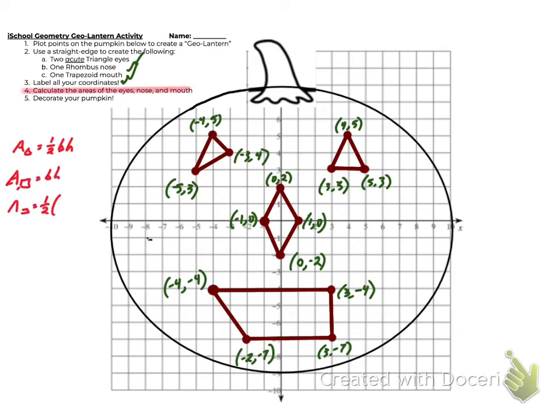Now this is where it gets a little trickier because we have to calculate the areas. The area of a triangle is one-half base times height. The area of a rectangle is base times height, and the area of a trapezoid is one-half base one plus base two times the height.